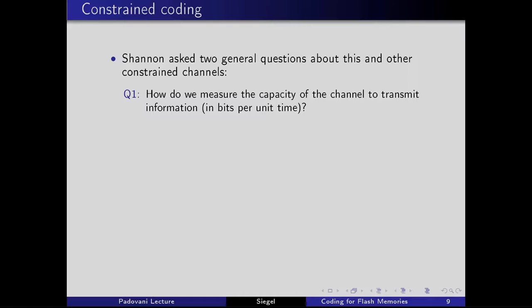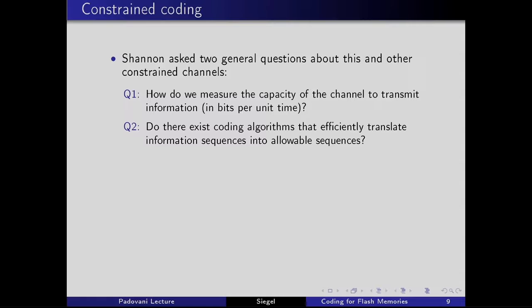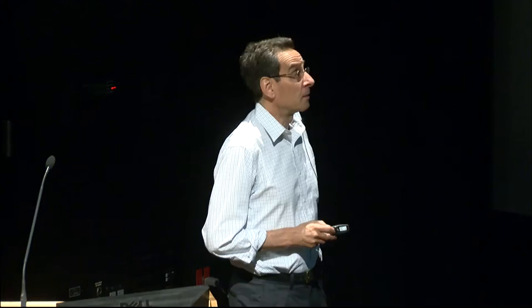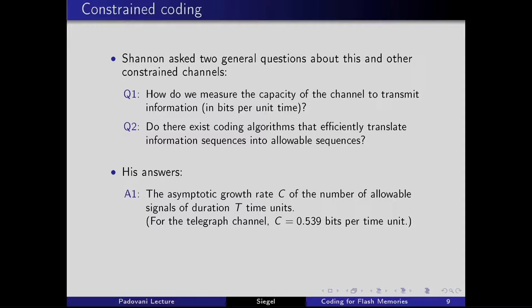Shannon asked two questions about the telegraph channel and other constrained channels: first, how do we measure the capacity in bits per time unit? Second, do there exist coding algorithms that efficiently translate unconstrained binary sequences into allowable sequences? He answered both. The capacity is the asymptotic growth rate of allowable signals of duration t, which he computed to be 0.539 bits per time unit for the telegraph channel.